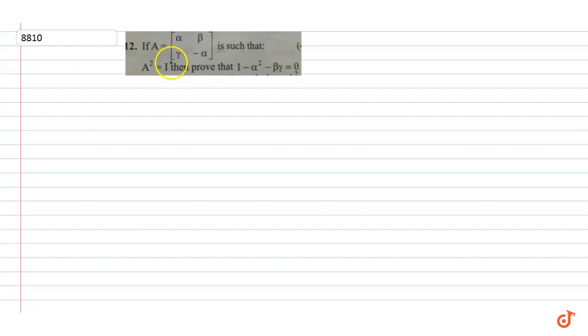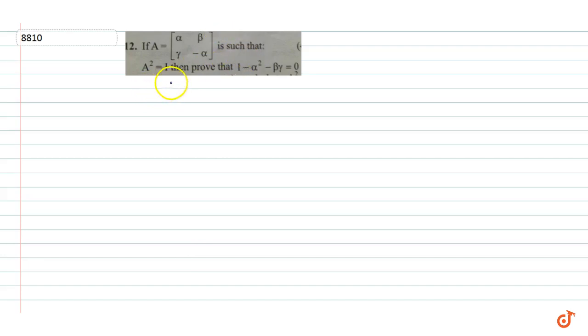In this question, if matrix A is equal to [α, β; γ, -α], such that A squared is equal to the identity matrix, then prove that 1 minus α squared minus βγ is equal to 0.